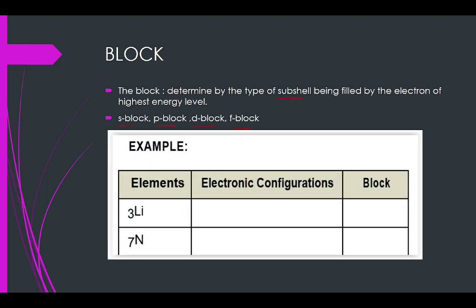For example, looking at lithium: 1s2, 2s1. What is the block? For the block, you look at the end of the subshell. The subshell here is S. So for group 1 and group 2, this is S block.